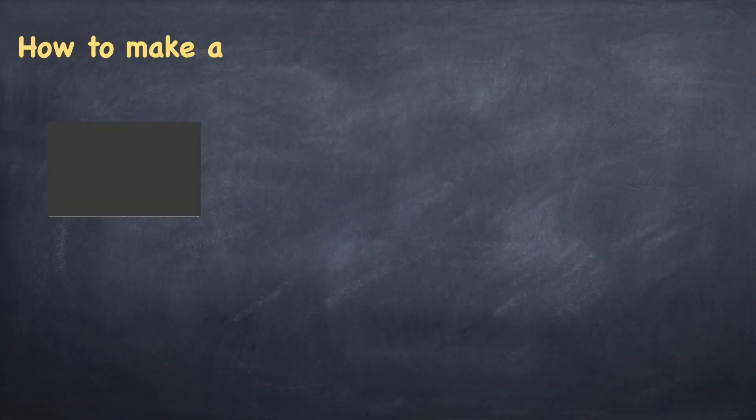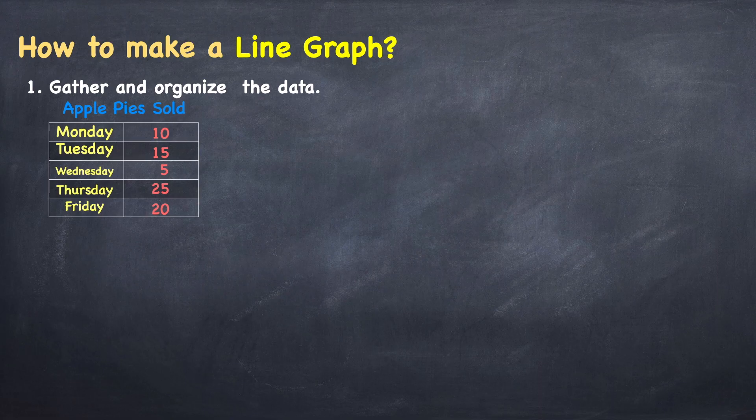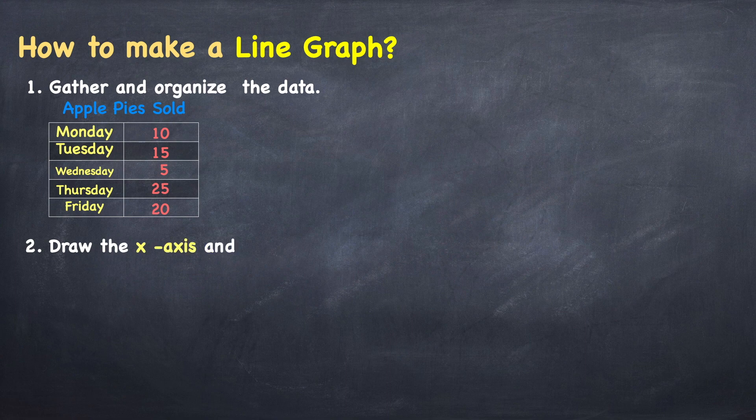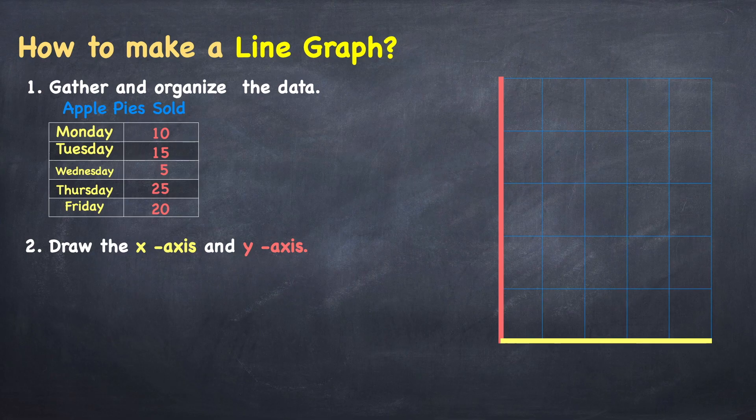How to make a line graph. Gather and organize the data. Apple pie sold. Draw the x-axis and y-axis. Add axis labels, categories, and scales.